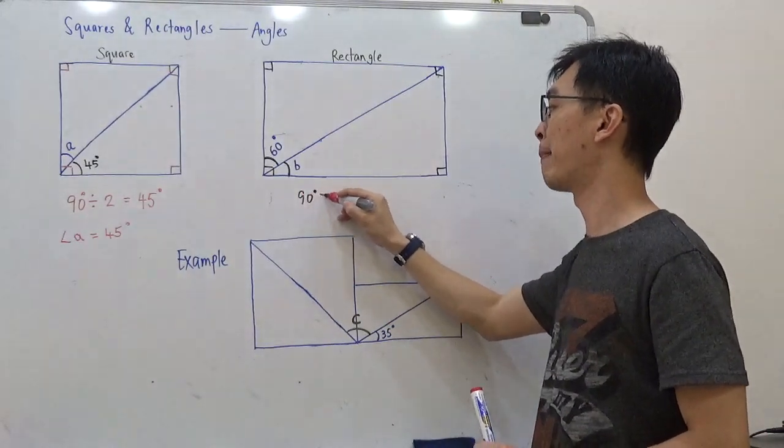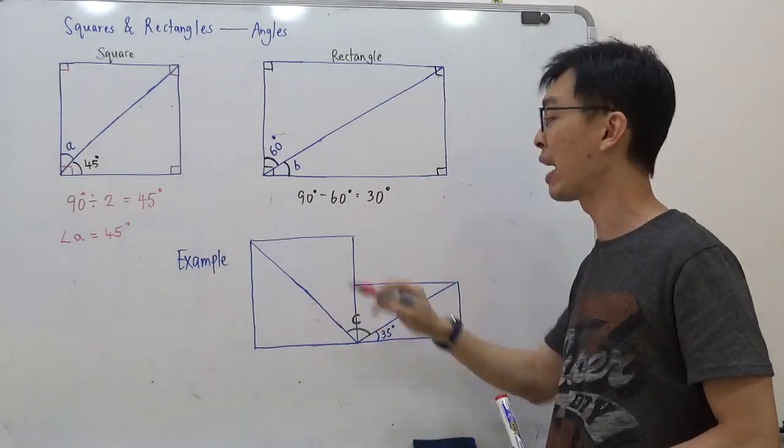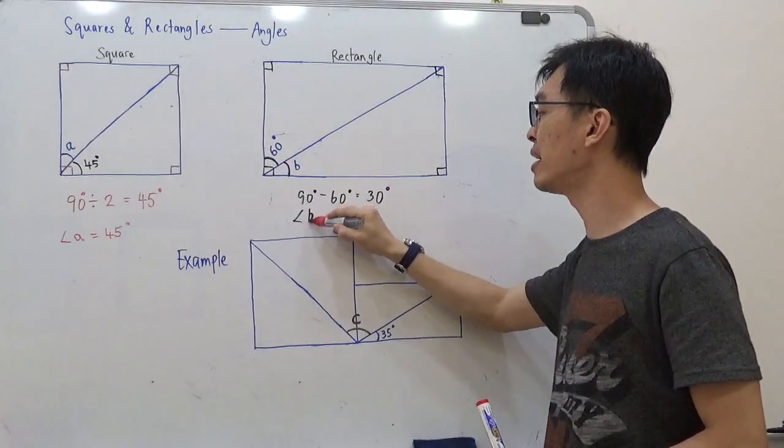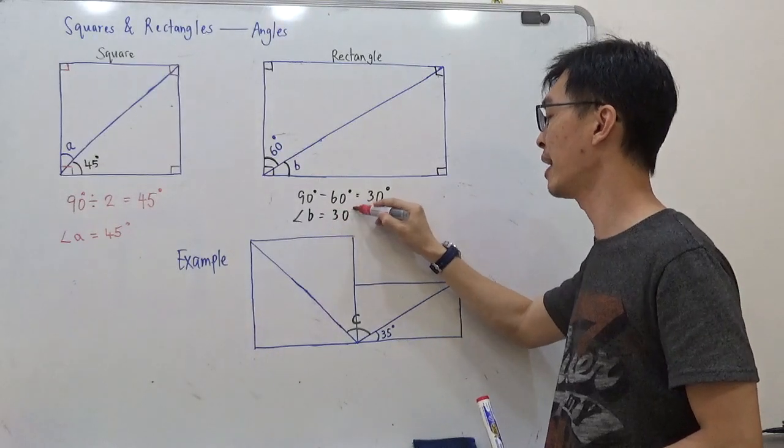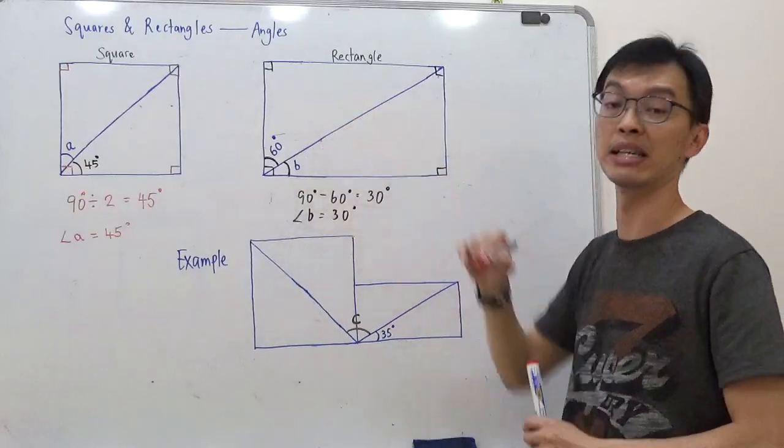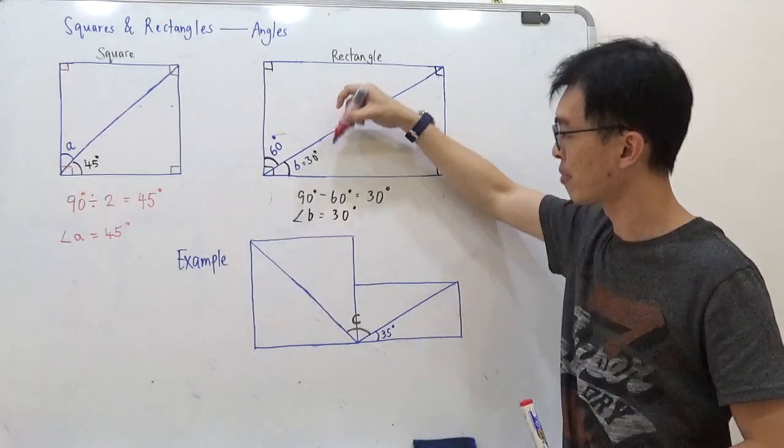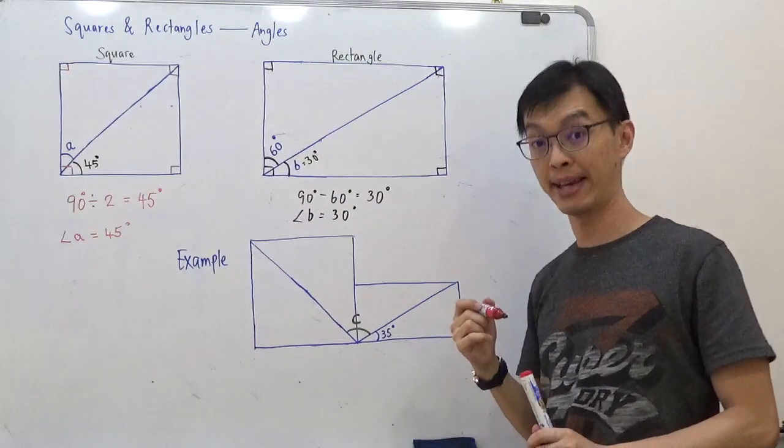And angle B equals to 30 degrees. That's how we get the answer. So this is 30. See, if I put 30 here, 30 plus 60, is it 90? Yes, right?